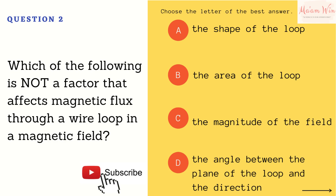Question number two: which of the following is not a factor that affects magnetic flux through a wire loop in a magnetic field? Letter A, shape of the loop. Letter B, the area of the loop. Letter C, the magnitude of the field. Letter D, the angle between the plane of the loop and the direction. Choose the letter of the best answer.